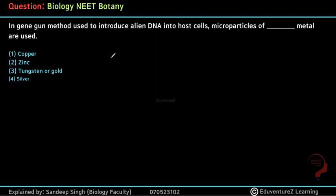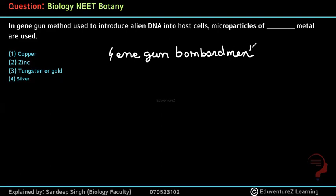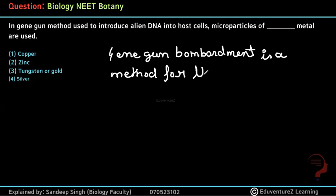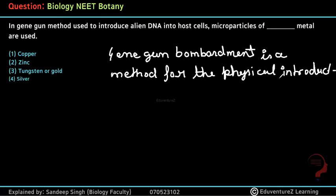If we talk about the gene gun method, what is its function? Gene gun bombardment is a method for the physical introduction of DNA into the plant cell.